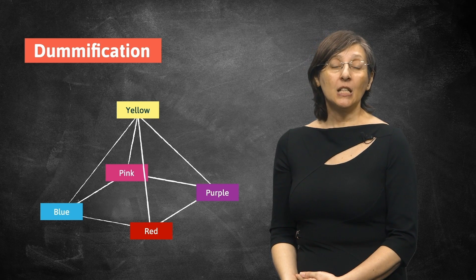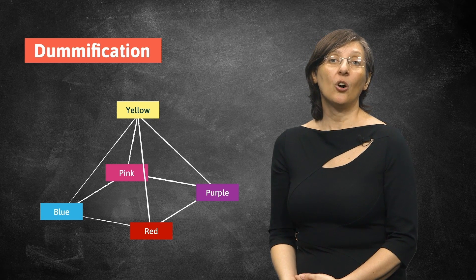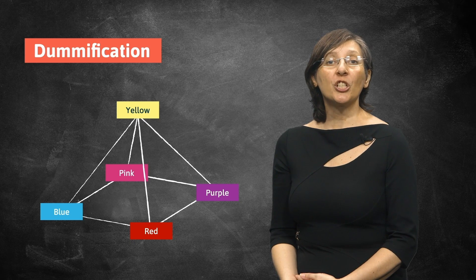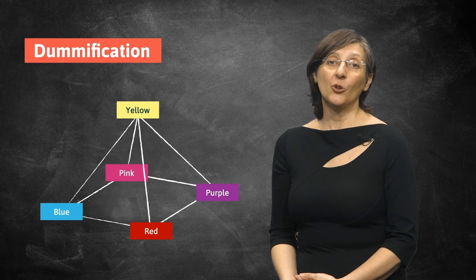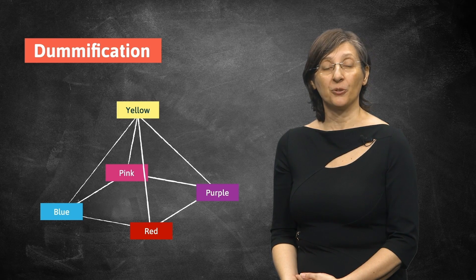Of course, if colors would have a natural order among them, we would just translate them to a numeric variable, keeping the original order among the values.